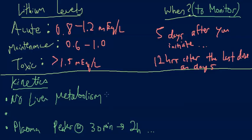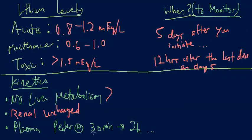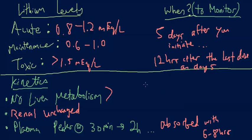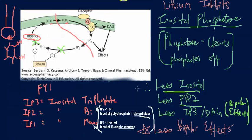Pharmacokinetics: there is no liver metabolism, so patients with hepatic impairment can still receive lithium. Elimination is almost entirely renal — excreted unchanged — which is why monitoring renal function is important. Plasma levels peak within 30 minutes to 2 hours, and absorption is nearly complete within 6 to 8 hours. The most important thing to remember is that lithium inhibits inositol phosphatase.